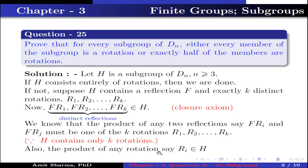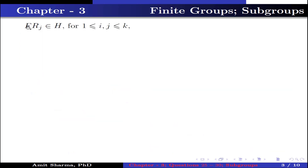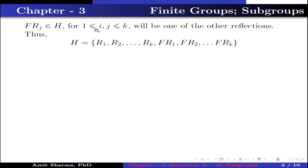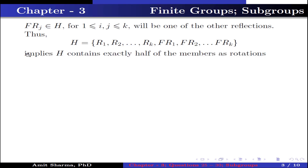Also the product of any rotation rᵢ in H and any reflection f·rⱼ in H, for 1 ≤ j ≤ k, will be one of the other reflections. Thus H contains the elements r₁, r₂, up to rₖ (rotations) and f·r₁, f·r₂, up to f·rₖ (reflections). This implies H contains exactly half of its members as rotations and exactly half as reflections.